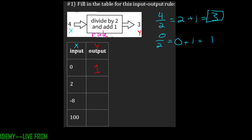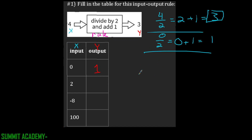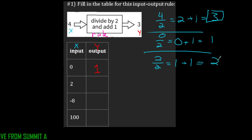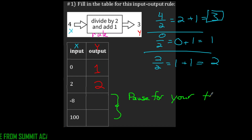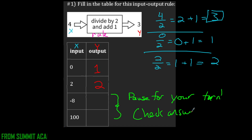If we have input 2: 2 divided by 2 is 1, and 1 plus 1 is 2. So when our input is 2, our output is also 2. Now I want you to pause and try the remaining steps — be sure to check answers with me.